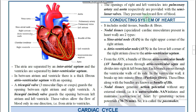The conducting system of the heart consists of specialized nodal tissue. Nodal muscles are present in the heart and conduct different types of electrical impulses. The heart is a myogenic heart. The conducting system includes nodal tissue, bundles, and fibers.